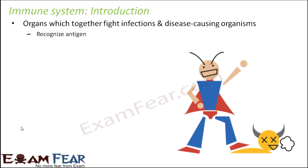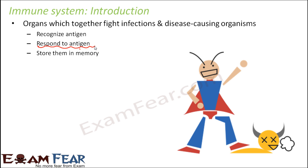These organs will actually recognize the antigen and respond to it. The immune system responds to antigens by producing antibodies, and those antibodies will kill the antigens and then store them in memory. Memory is very important so that when the same antigen attacks for the second time, a better response can be given. The secondary response is always more intense compared to the primary response.